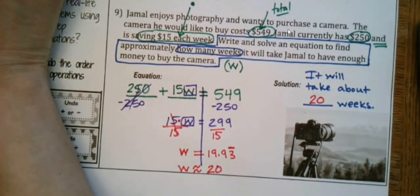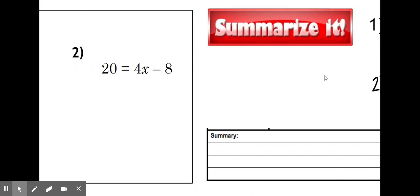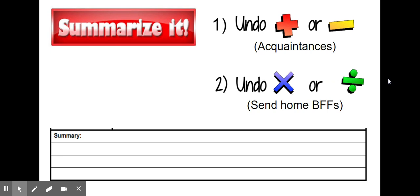Let's summarize. Because we're solving two-step equations, step one is always to undo addition or subtraction — by doing that you're sending home your acquaintances. Step two is always to undo multiplication or division — by doing that you send home your BFFs, who are always connected to you, the variable, with either multiplication or division. Thank you so much for joining me for two-step equations. Have a great time solving equations.